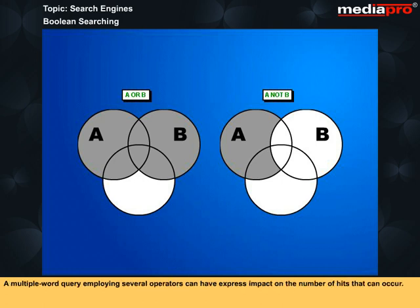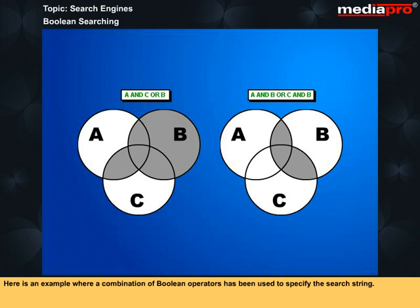A multiple word query employing several operators can have express impact on the number of hits that can occur. Here is an example where a combination of Boolean operators has been used to specify the search string.